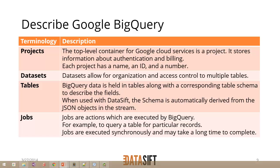Jobs are actions which are executed by Google BigQuery. For example, if we make a query on a table for some particular records that match the attributes that we define, then that would be a job. They're synchronous, and some of them, depending on the complexity, can take quite a long time to finish.